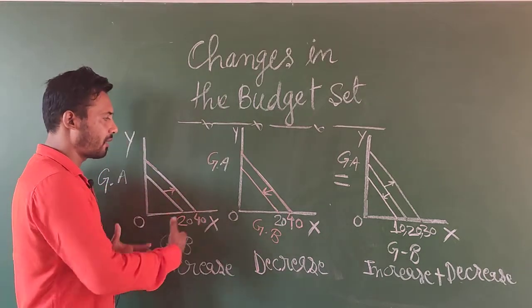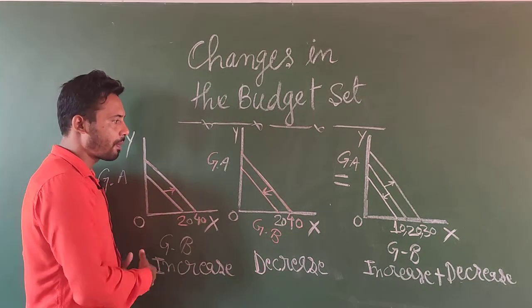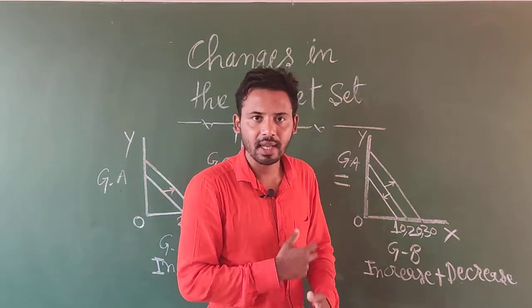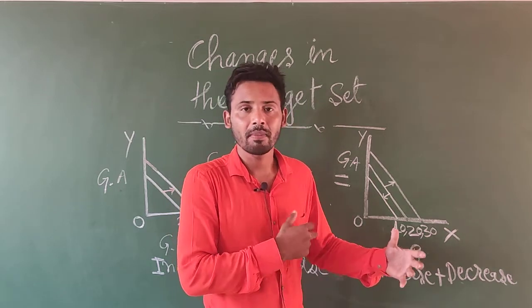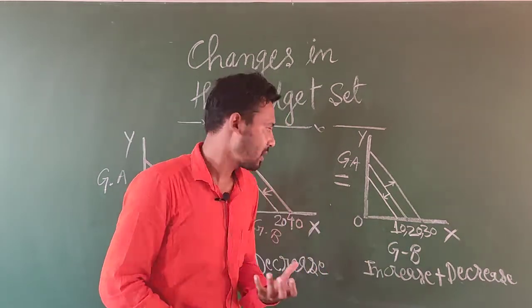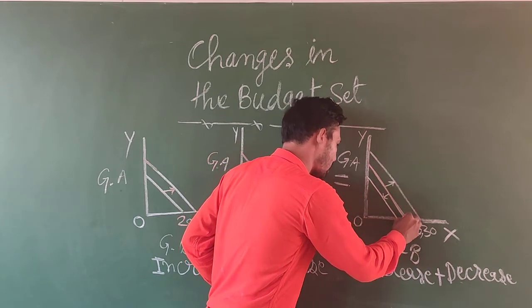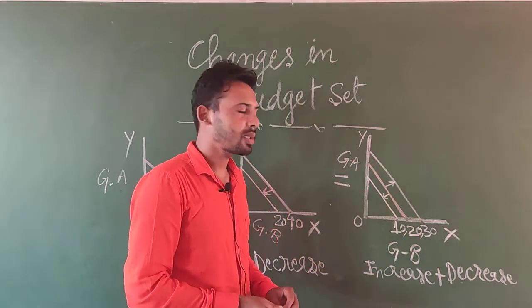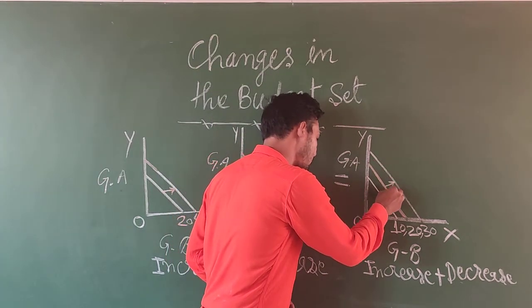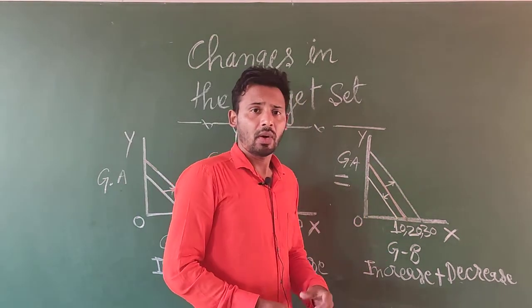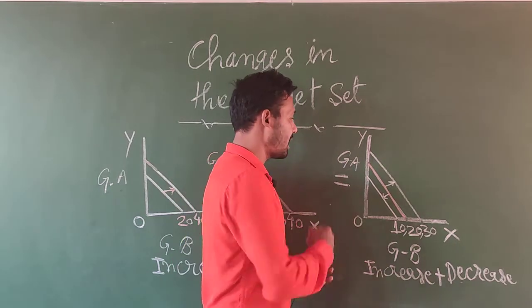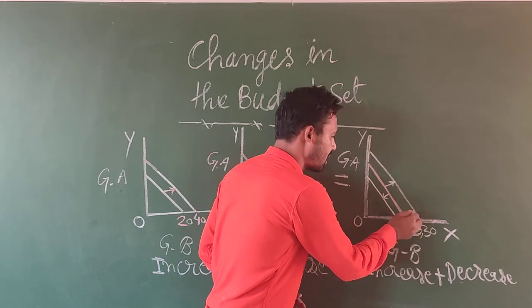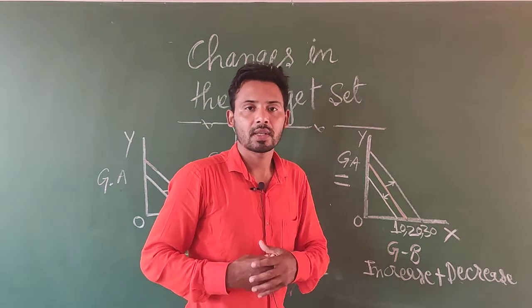Now with the combination of these two we have increase and decrease in the budget set or budget line and how do we show that? This is our original budget line. On the y-axis we have good A and in the x-axis we have good B and our original amount is rupees 20.